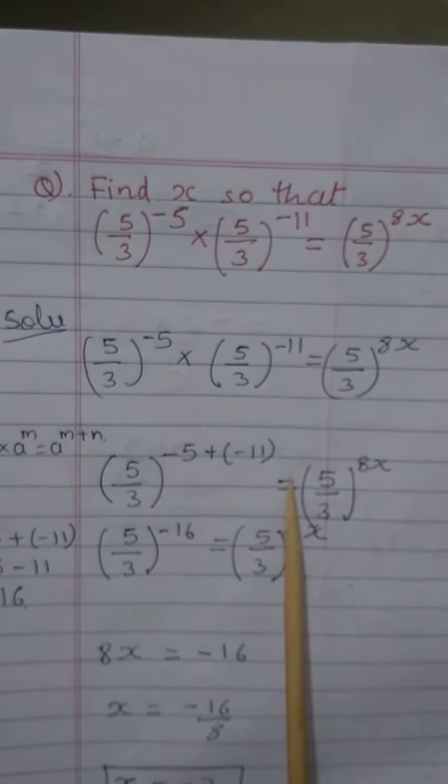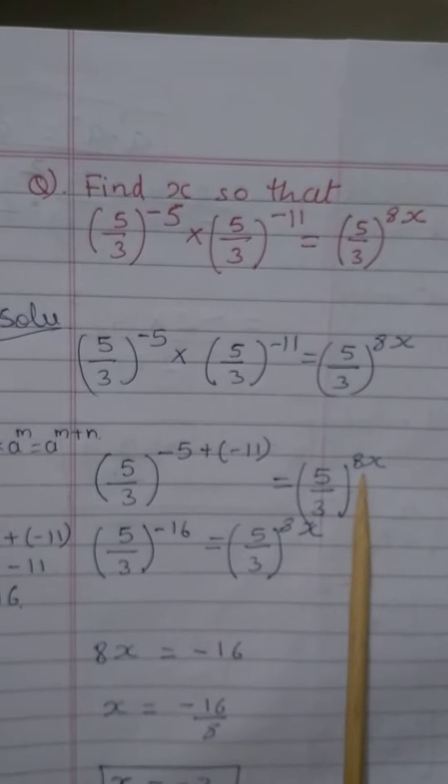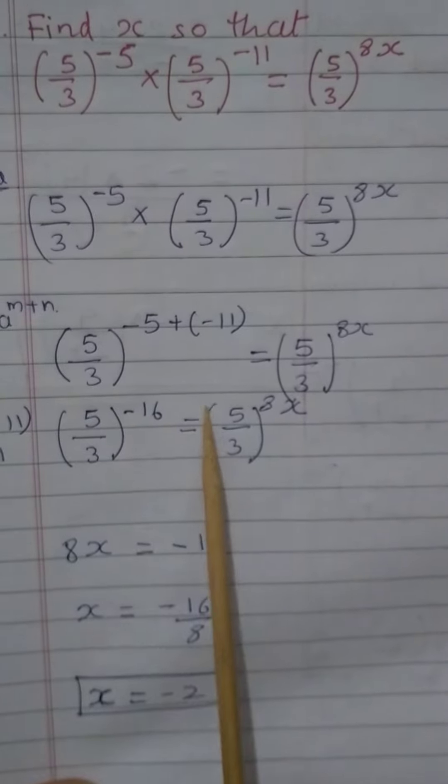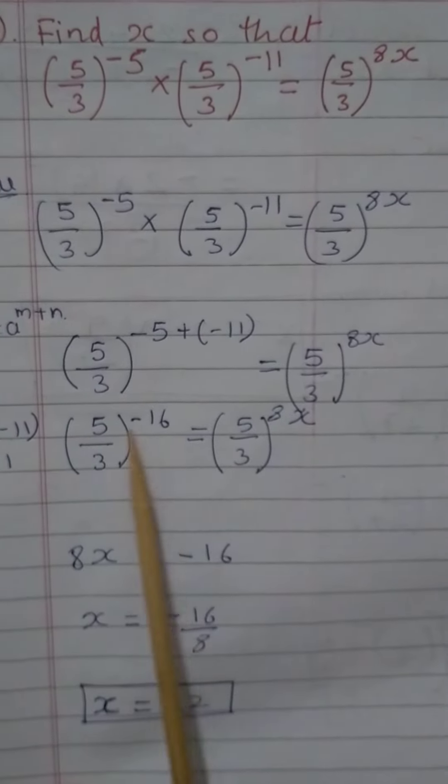So minus 5 plus minus 11 is equal to 5 by 3 raised to 8x. So here, because this base is common, so 8x equal to minus 16.